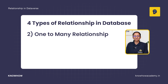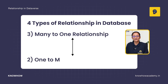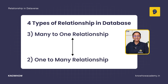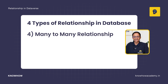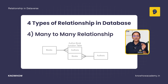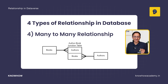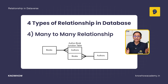The third type of relationship is many-to-one, which is the inverse of one-to-many. The fourth type is many-to-many relationship, where one record can have multiple reference records and one reference record can also have multiple main records. That is called a many-to-many relationship.